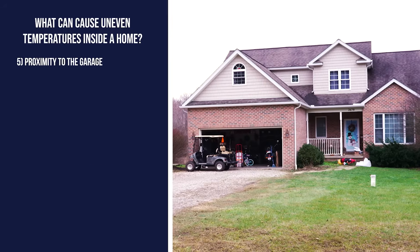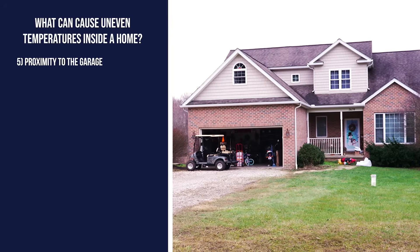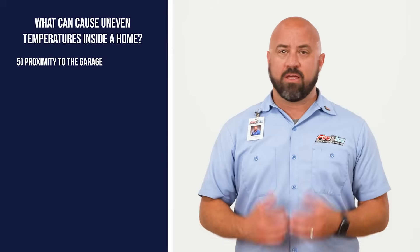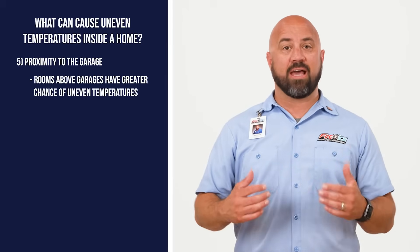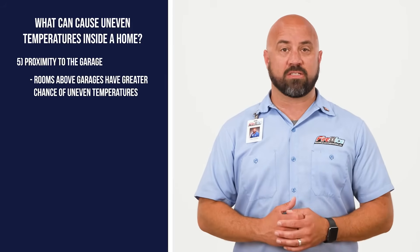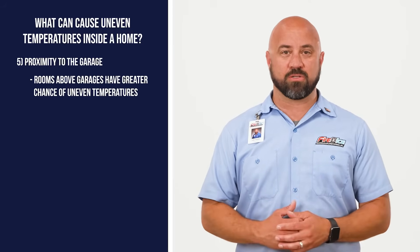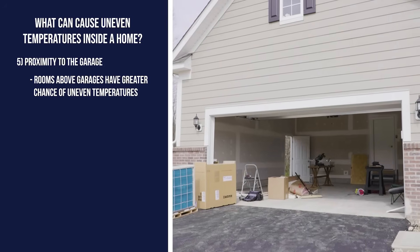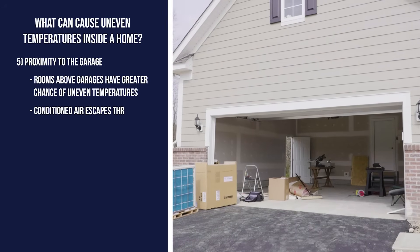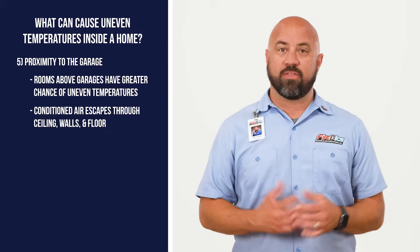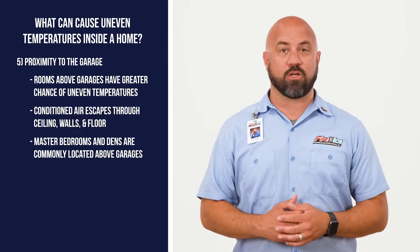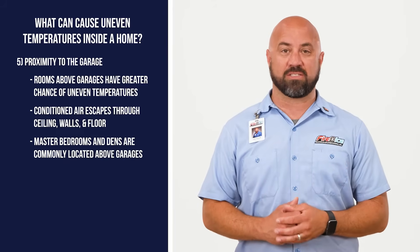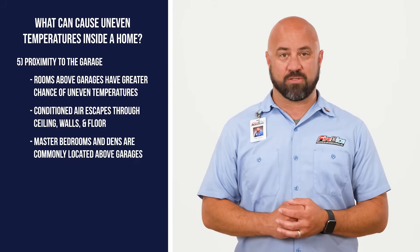The last contributing factor to uneven temperatures is the proximity to the garage. Having a room or a space above a garage has an increased chance of experiencing erratic temperatures. Why? The air isn't just exfiltrating out of the walls and ceilings, but also the floor. This is why master bedrooms or dens above a garage are notorious for dealing with uneven temperatures.